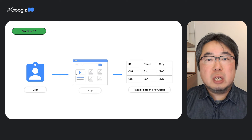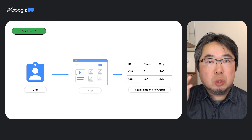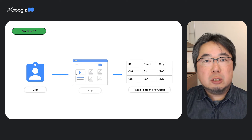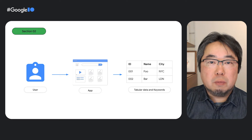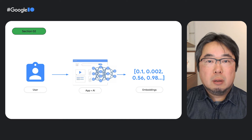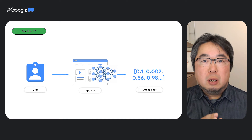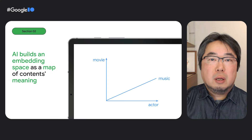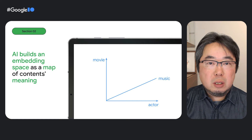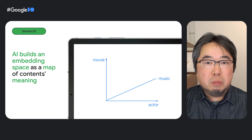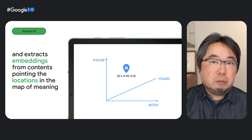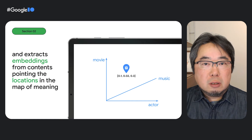In traditional IT systems, most data is organized as structured or tabular data using simple keywords, labels, and categories in databases and search engines. In contrast, AI-powered search services arrange data into a simple data structure known as embedding. Once joined with specific content like text, images, tweets, or anything, AI creates a space called embedding space, which is essentially a map of the content's meaning. AI can identify the location of each content on the map — that is what embedding is.